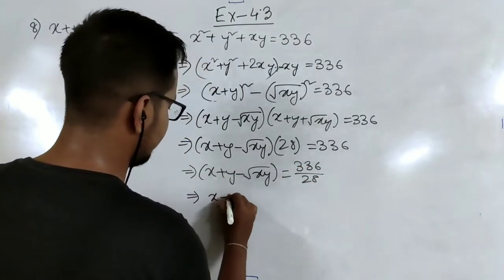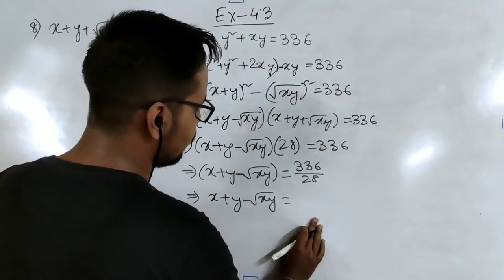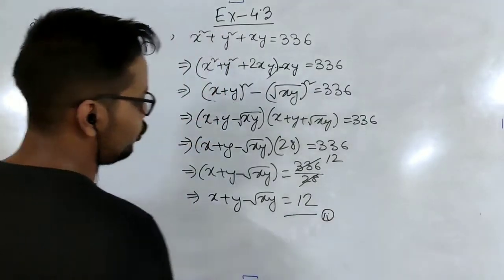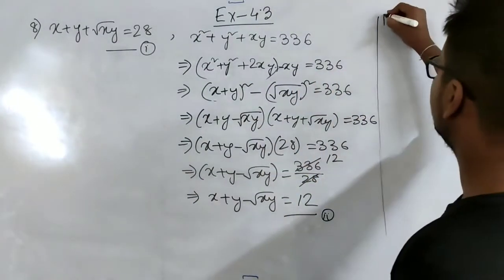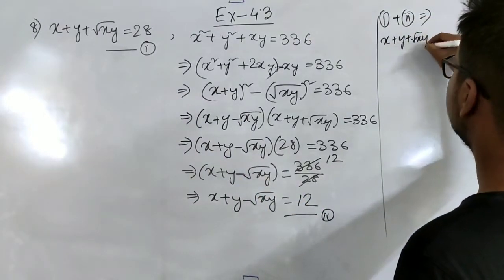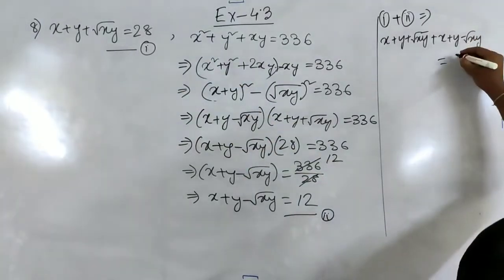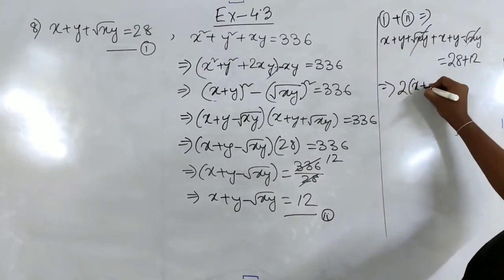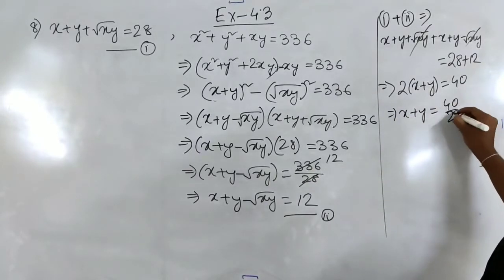Adding equation 1 and equation 2, root xy terms cancel: (x plus y plus root xy) plus (x plus y minus root xy) equals 28 plus 12. This gives 2(x plus y) equal to 40, so x plus y equals 20. We label this equation 3.